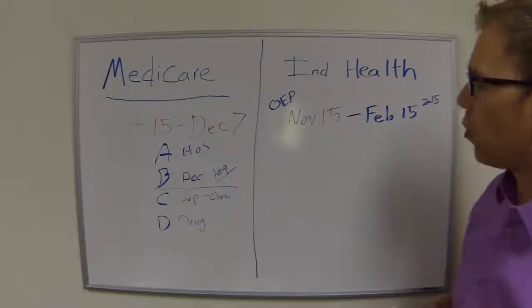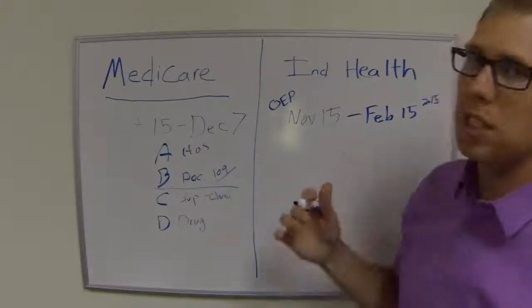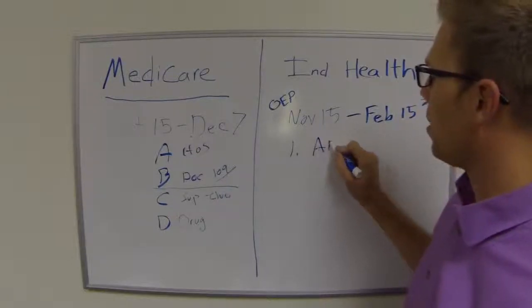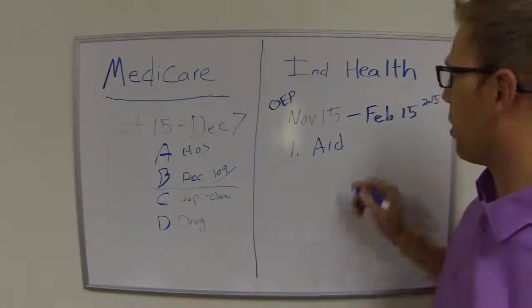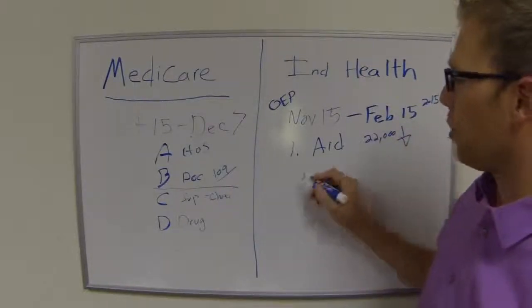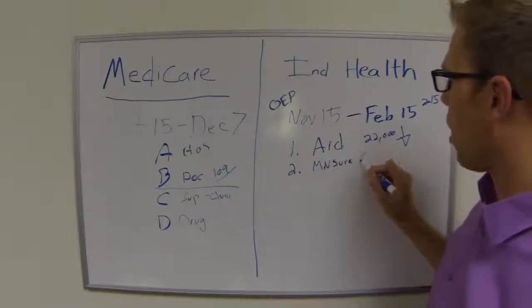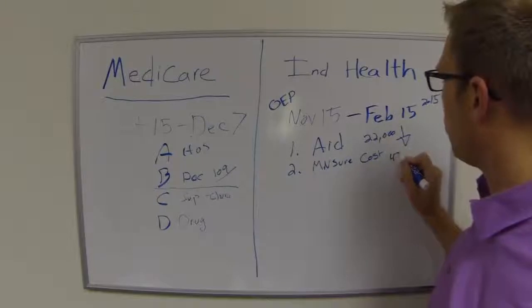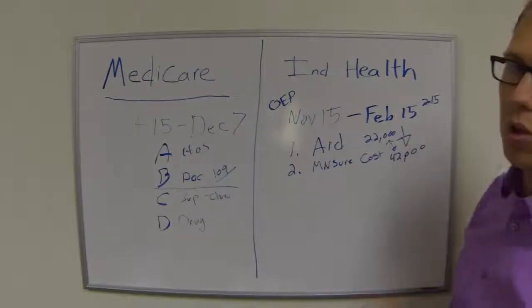For Individual Health Care in Minnesota, we actually have three programs, and it's based upon your taxes. The first program is aid — you'd be on the county, a Medicaid system based upon your income. It's usually $22,000 or below, and you can go through MNsure. The second option is MNsure, where you get a discount for cost sharing, and it depends on your family size — up to about $42,000.